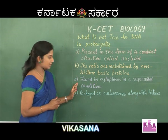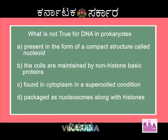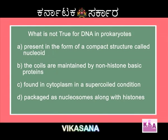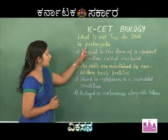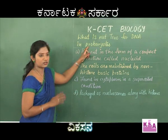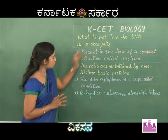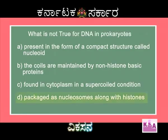The reason for this is the genetic material is not covered by a nuclear membrane. Then comes the last option: packaged as nucleosomes along with histones. This option with respect to prokaryotes is not right. That's why the right option for this question is option D.